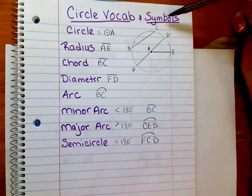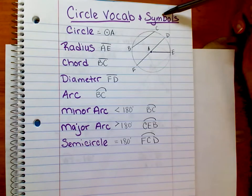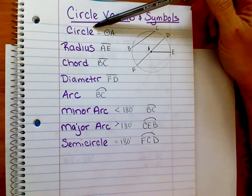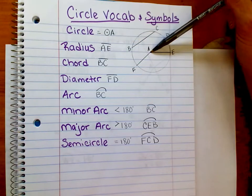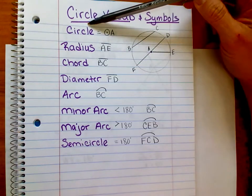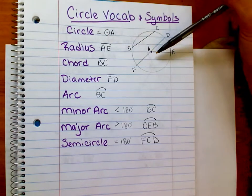This tutorial is about circle vocabulary and the symbols we use to write these different things. The first thing is a circle. The definition of a circle is a set of points that is the same distance from a certain point. Sometimes it's called a locus of points equal distance from a certain point.